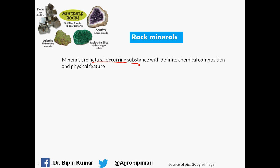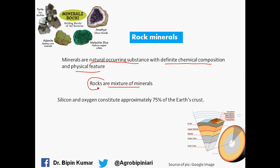Minerals are naturally occurring substances with a definite chemical composition and physical features. In the last video I explained what rocks are — rocks are actually a mixture of minerals, while minerals have a definite chemical composition and physical features. Silicon and oxygen constitute about 75% of the earth's crust, so these are some facts about rocks and minerals.